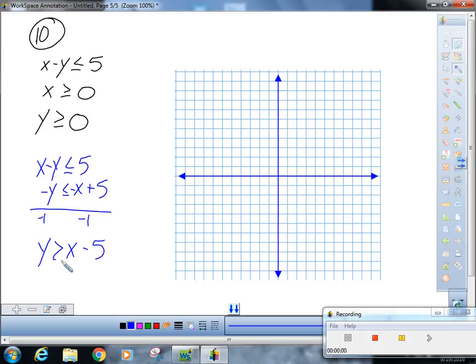Greater than or equal to, excuse me. So our y-intercept is negative 5, our slope is 1. This line is filled in, so it starts out pretty normal.